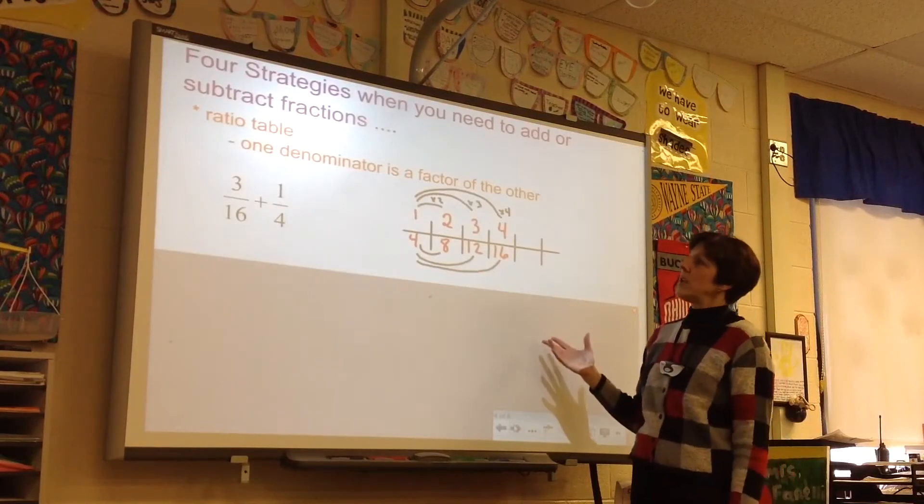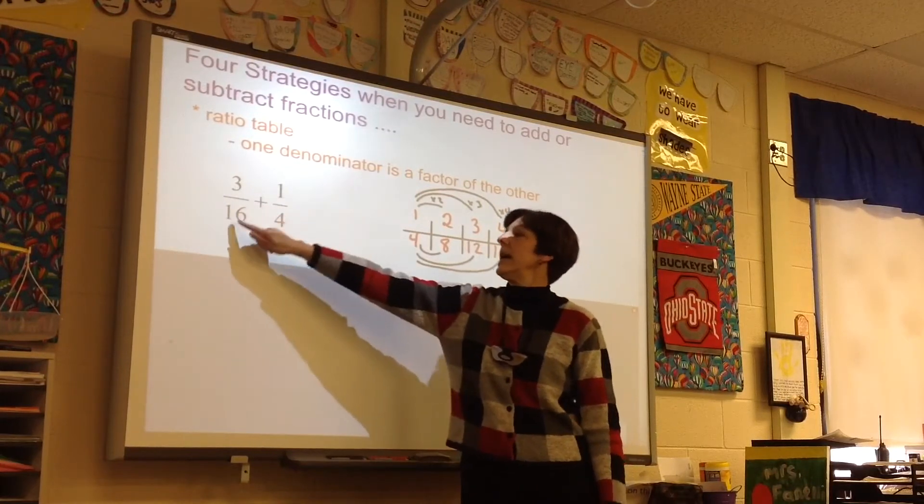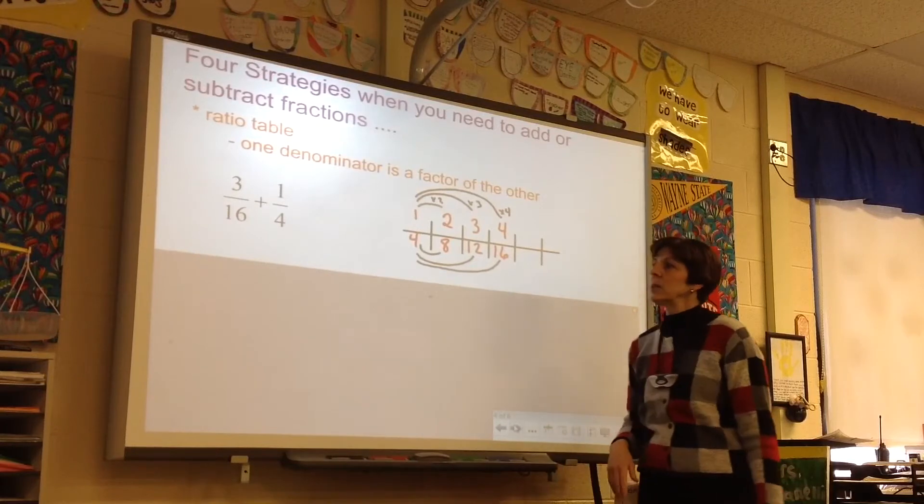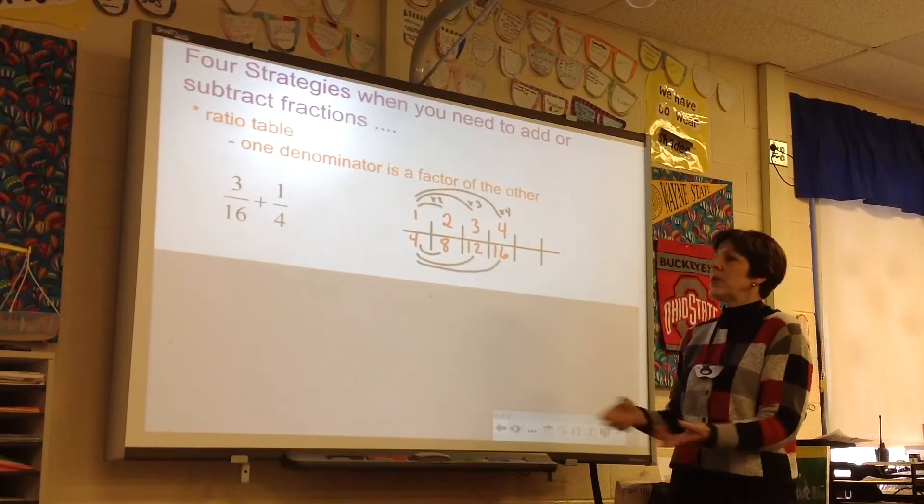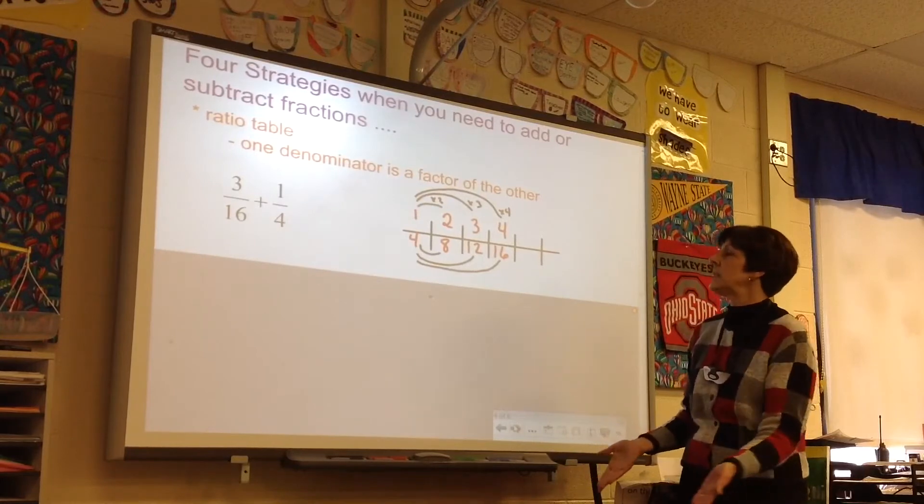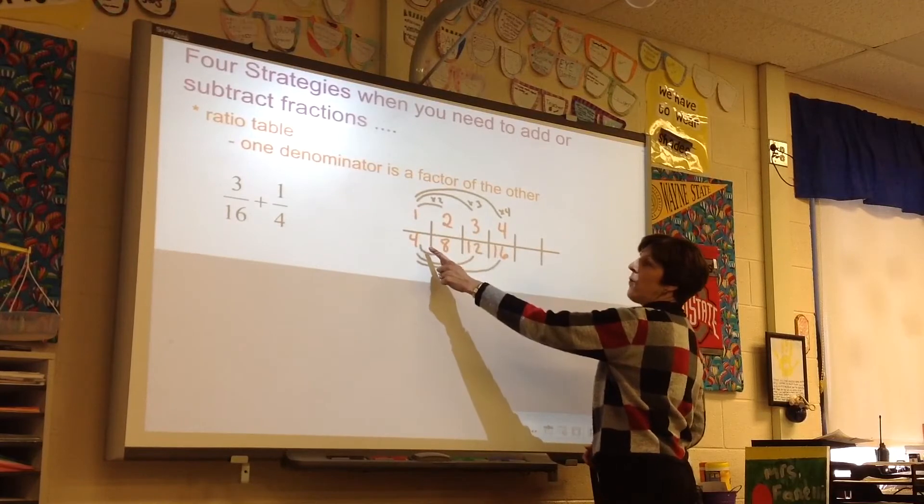Another strategy is the ratio table. This is what we want them to do with one denominator is a factor of the other. So 3 sixteenths plus 1 fourth. The 1 fourth needs to be put to the same denominator, and 4 is a factor of 16. So here's what a child's ratio table might look like. They start with 1 fourth.